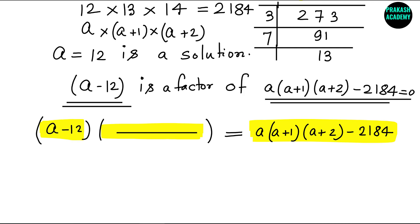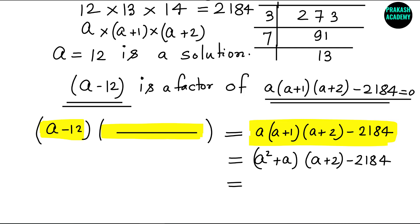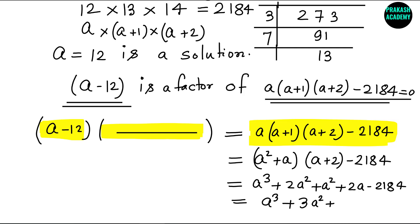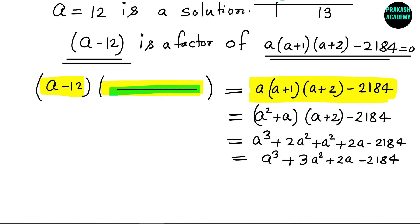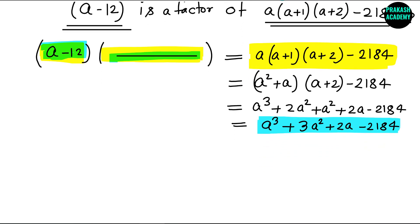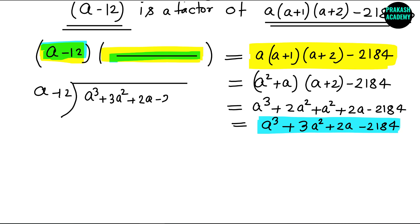Let us first expand the expression. Multiplying A by A plus 1 gives A squared plus A. Multiplying further by A plus 2 gives A cubed plus 2A squared plus A squared plus 2A minus 2184, which simplifies to A cubed plus 3A squared plus 2A minus 2184. We now divide this by A minus 12.